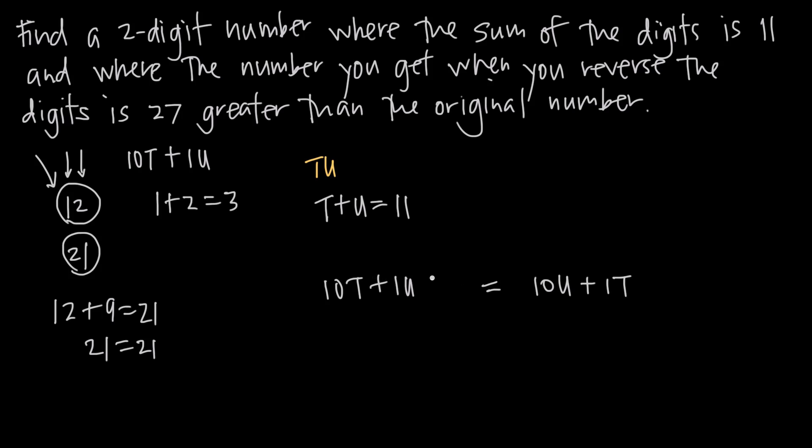So in order to balance this equation, we have to say plus 27 over here because this is 27 greater than this one. So we're going to have to add 27 to the original number in order to make these balanced. Now when we simplify this equation, we're going to get 10t plus u plus 27 is equal to 10u plus t.